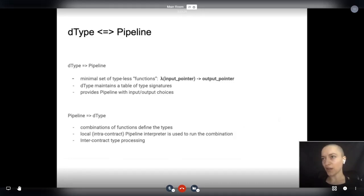dType and Pipeline go hand in hand. dType provides a minimal set of typeless functions, maintains a table of signatures, provides Pipeline with input and output choices being able to parse the input and output pointers. Pipeline helps us turn dType into combinations of functions run by an intra-contract Pipeline interpreter, and will also provide inter-contract type processing.